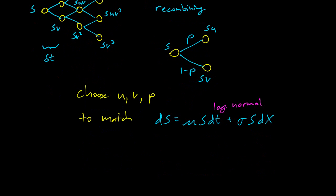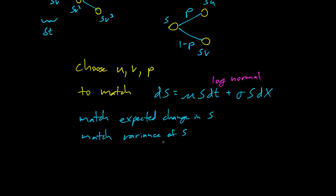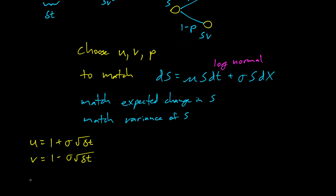What we have to do is match the expected change in s at each time step, and we also have to match the variance. You have three unknowns and a couple of equations to satisfy, so there are multiple ways to do this. One way is to choose u equals 1 plus sigma root delta t, and v equals 1 minus sigma root delta t, then choose p equals one-half plus mu delta t over 2 sigma.